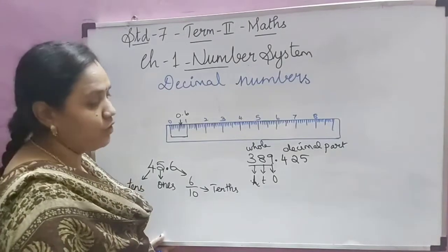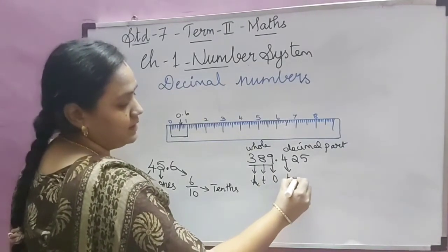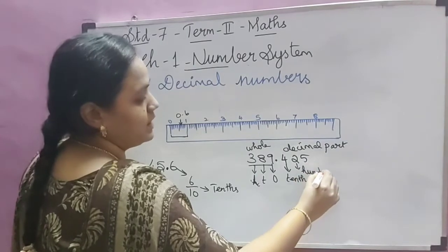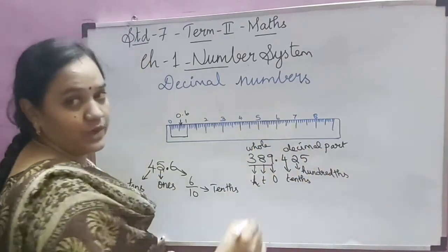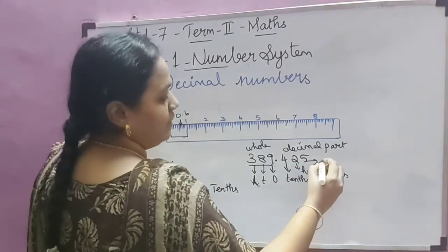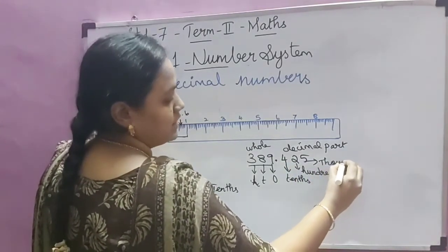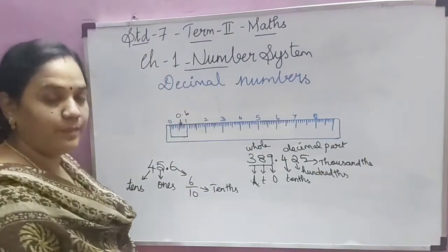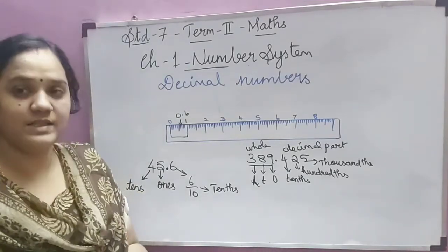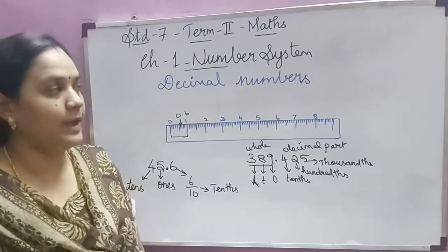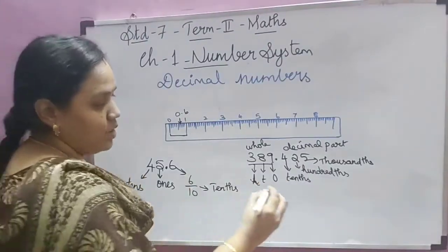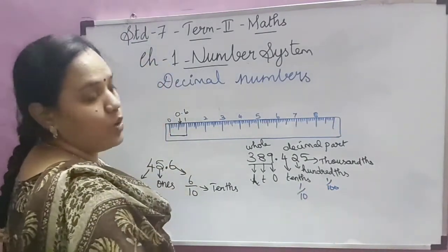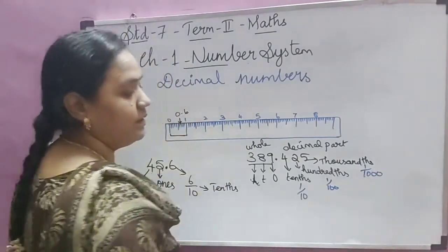The place value of 4 is tenths (T-E-N-T-H-S), 2 is hundredths (H-U-N-D-R-E-D), and 5 is thousandths (T-H-O-U-S-A-N-D-T-H-S). We can also call the tenths place as 1/10 place, the hundredths as 1/100 place, and the thousandths as 1/1000 place. Either way of referring to the place value is acceptable.